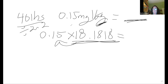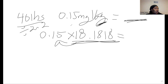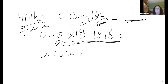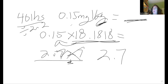The answer is 2.727 — another repeating decimal. Rounded to the nearest tenth, the answer is 2.7. Does everybody know how to round? If the next digit is 5 or above, you round up; lower than that, stay at the same number. So 2.7 is your answer. Now you know how to do a pediatric dose — there's always one on your exam.